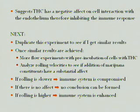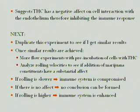What I'm going to do next is duplicate that experiment and see if I can get similar results. Once I can, I'm going to do the flow experiment again with neutrophils rolling past the endothelium to see if the rolling velocity is increased or decreased. If rolling is slower, our conclusion is that the immune system is compromised. If there's really no effect, we'll have to do further experiments. If rolling is increased, that means the immune system response is actually enhanced, which would be a good thing.